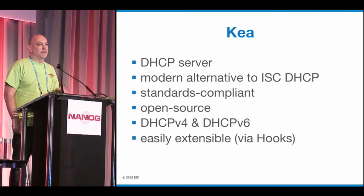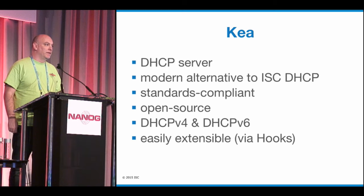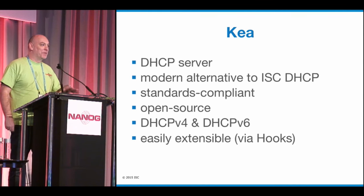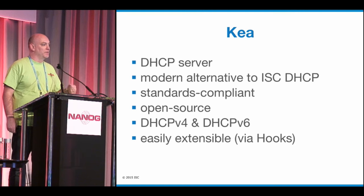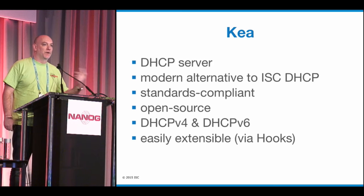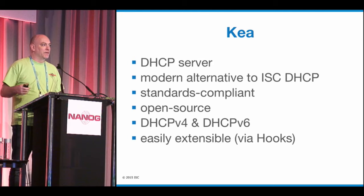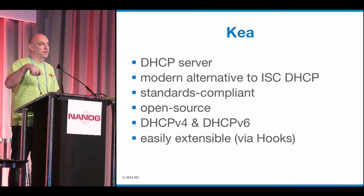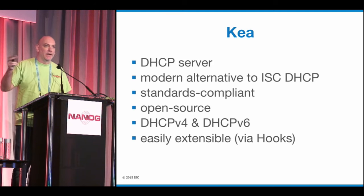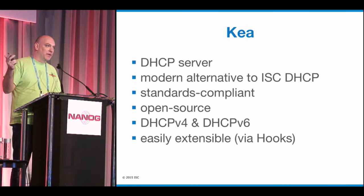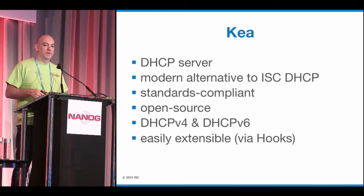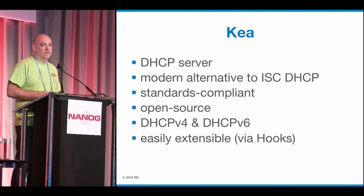About Kea itself: it is a DHCP server only. There are three parts to the whole DHCP thing — and I realize DHCP is sort of like the broccoli of network operations, not that exciting. For Kea, we have a DHCP server only. ISC DHCP also has a relay that takes broadcast packets and makes them unicast to find a DHCP server. We didn't feel relay or client needed any attention. Kea is our alternative to ISC DHCP — standard compliant, open source, does DHCPv4 and DHCPv6, and is very easily extensible via hooks.